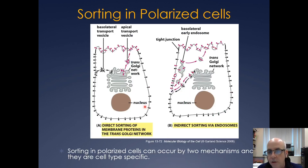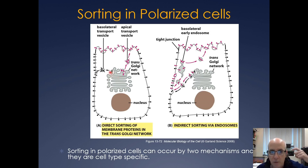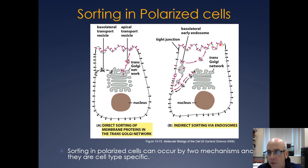There are two basic mechanisms. You can have direct sorting where vesicles destined to the apical surface bud off from the trans-Golgi network and fuse with the apical surface, and likewise proteins destined for the basolateral surface bud off and fuse with the basolateral surface. But you can also have both go to the basolateral surface first, and then proteins destined for the apical surface get selected, packaged into a basolateral early endosome, and then bud off and fuse with the apical surface.